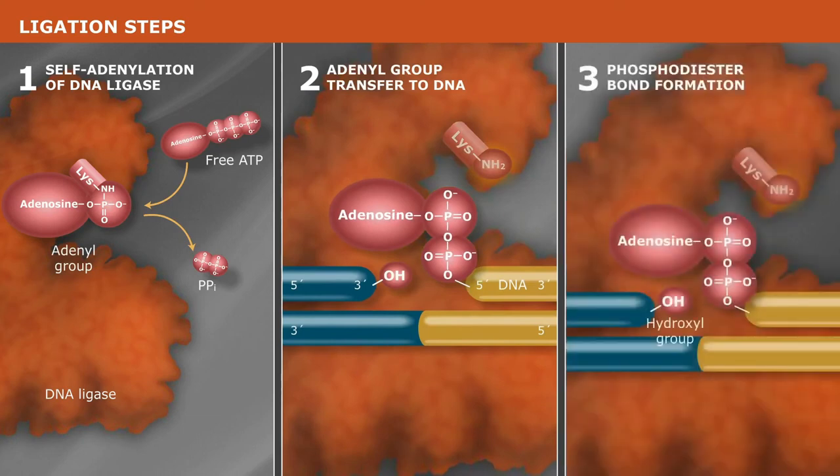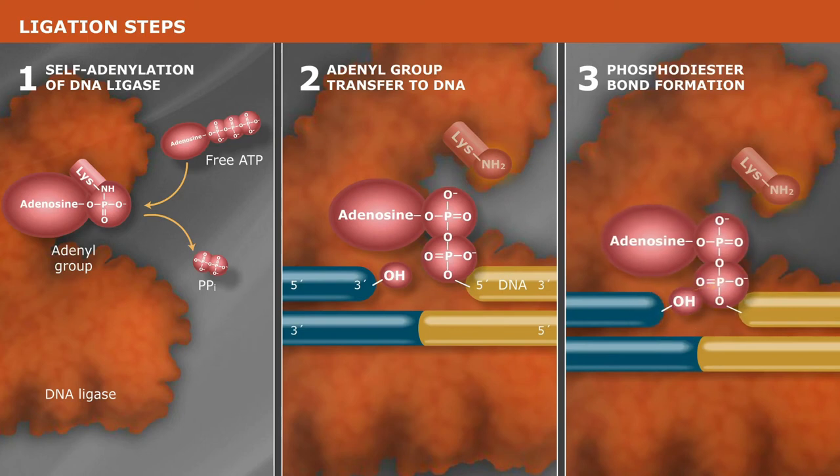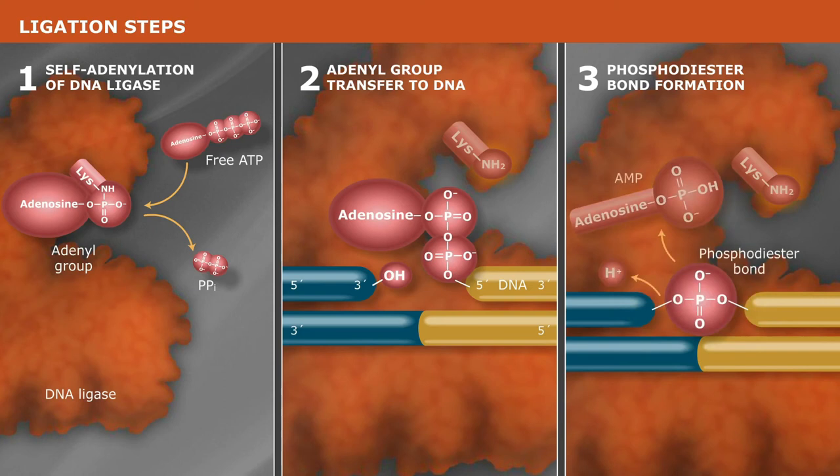Lastly, the formation of the phosphodiester bond proceeds through the reaction of the adenylated donor end with the adjacent 3'-hydroxyl acceptor, accompanied by the release of AMP.